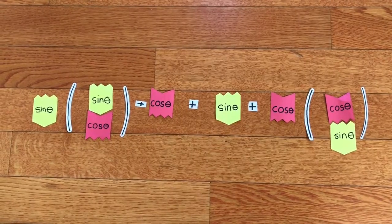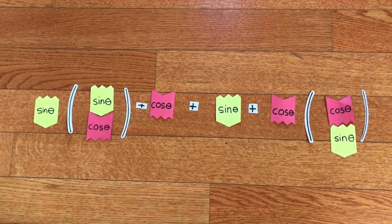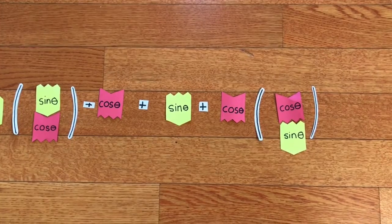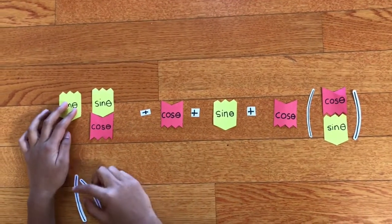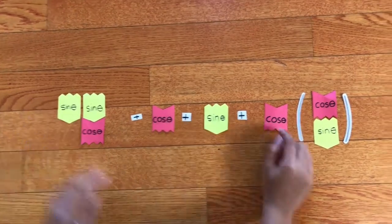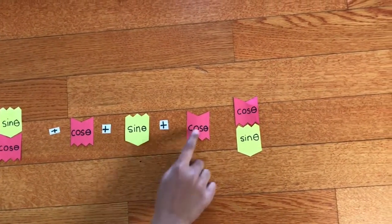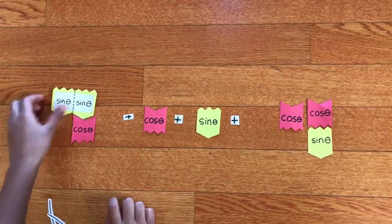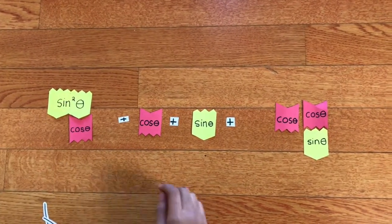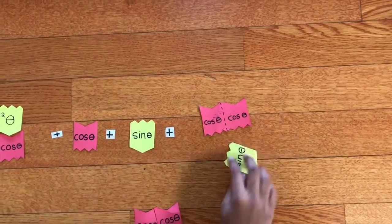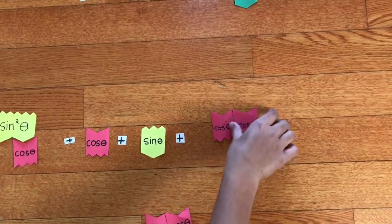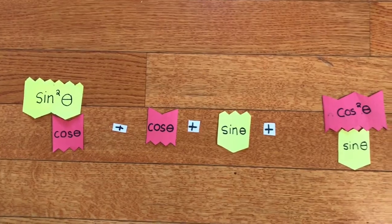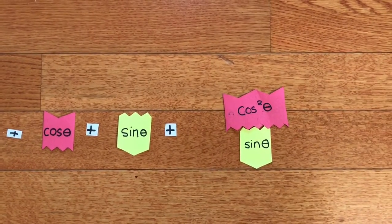Now we have sine theta times (sine theta / cosine theta), plus cosine theta, plus sine theta, plus cosine theta times (cosine theta / sine theta). This gives us sine theta times sine theta over cosine theta, and cosine theta times cosine theta over sine theta. So now we have sine squared theta over cosine theta, plus cosine theta, plus sine theta, plus cosine squared theta over sine theta.